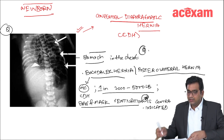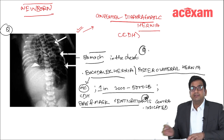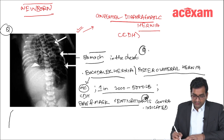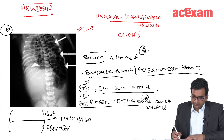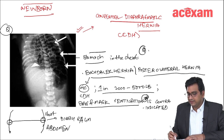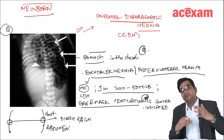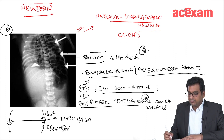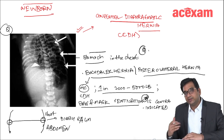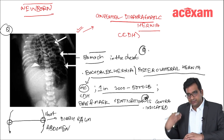Regarding the embryology of the diaphragm and how congenital diaphragmatic hernia forms: there is presence of a pleuroperitoneal canal, which forms a connection between the chest and the abdomen. Due to failure of closure of these pleuroperitoneal canals, there is herniation of the abdominal contents into the chest.